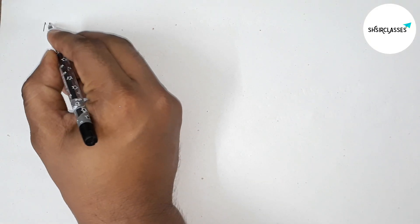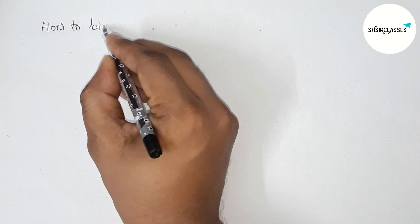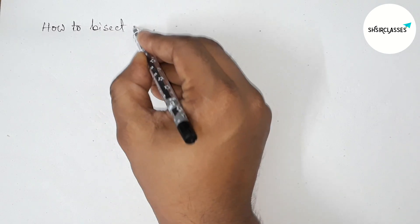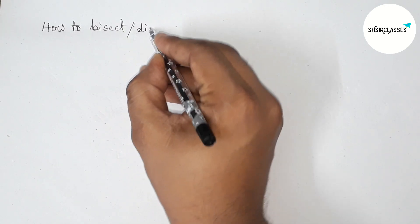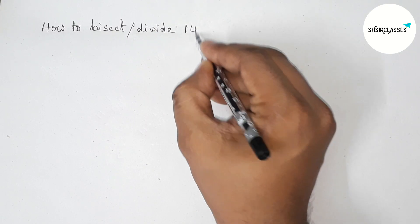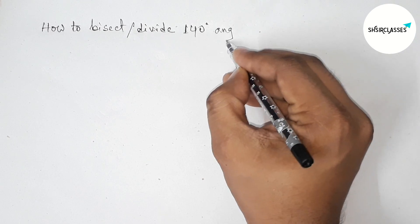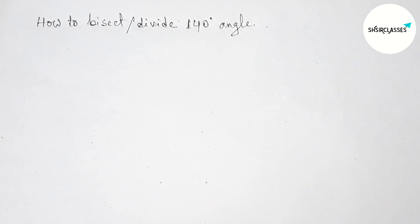Hi everyone, welcome to SI share classes. Today in this video we have to bisect or divide 140 degree angle in easy way. So please watch the video till the end, so let's start the video.